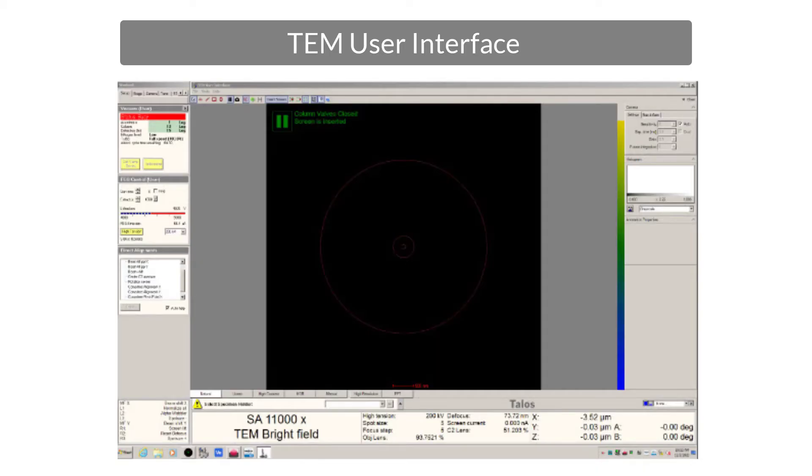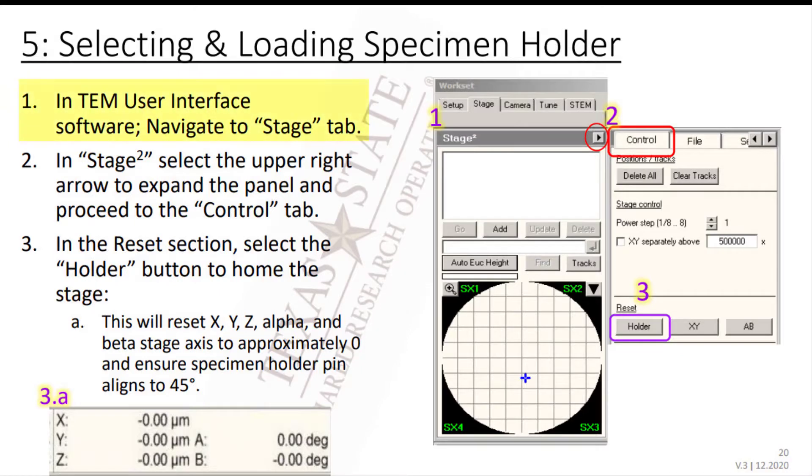To get started, in the User Interface, navigate to the Stage tab and select the upper right arrow to expand the panel. Proceed to the Control tab.